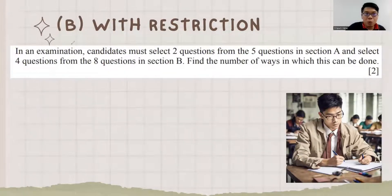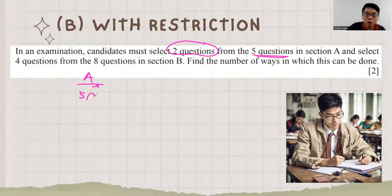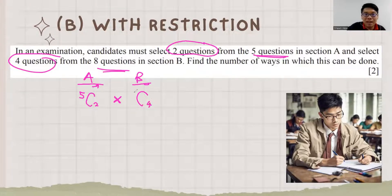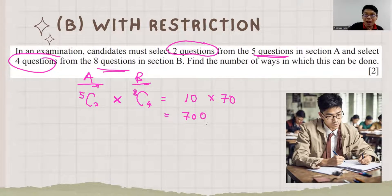Next restriction: in an examination, a candidate must select 2 questions from 5 in section A, and 4 questions from 8 in section B. So it's 5C2 × 8C4, which gives 10 × 70 = 700 ways to choose the questions.